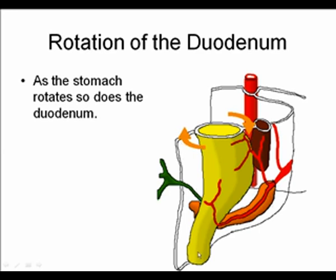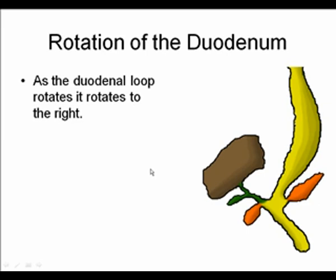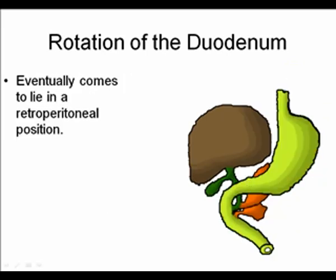As the stomach rotates, so does the duodenum, and the duodenal loop ends up rotating to the right. Along with it, the pancreatic buds and bile duct also rotate to the right. Eventually the duodenum comes to lie upon the posterior body wall, and the mesentery behind the duodenum gets reabsorbed — so the duodenal loop is said to be secondarily retroperitonealized.